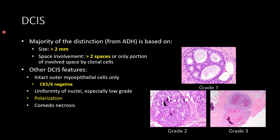This brings us to DCIS. The major distinction between ADH and DCIS is based on size — greater than two millimeters — and duct space involvement, involving greater than two spaces. In DCIS, we really only expect to see an intact layer of myoepithelial cells on the outside, making it CK5/6 negative. We'll also see more uniformity in the nuclei, especially in low grade, along with more polarization of cells around the lumen. In higher grade lesions, comedo necrosis may also be present.